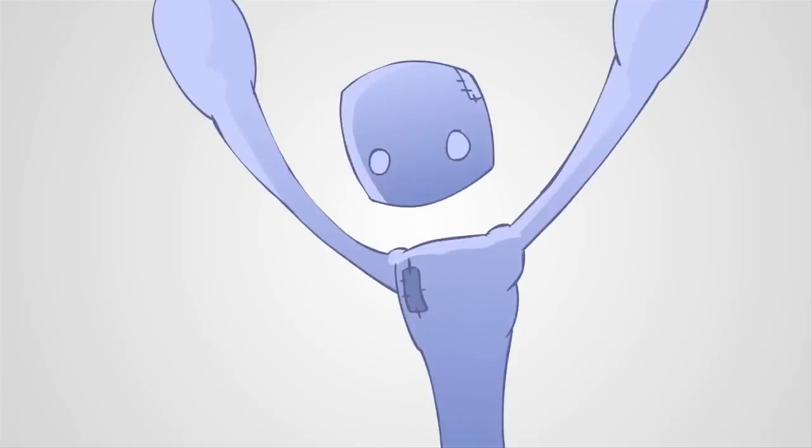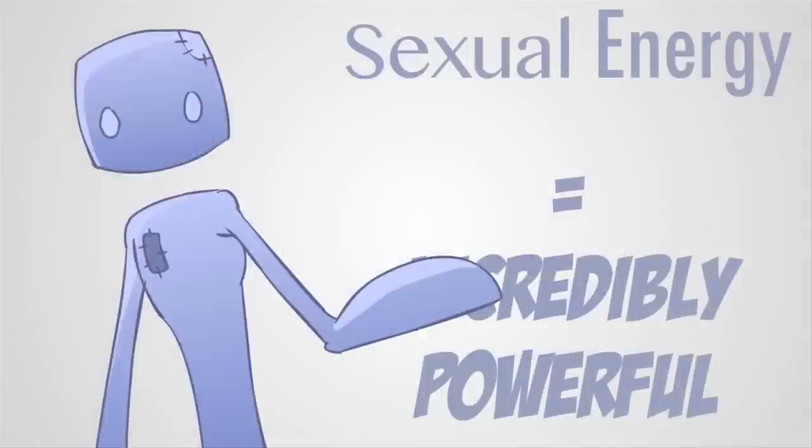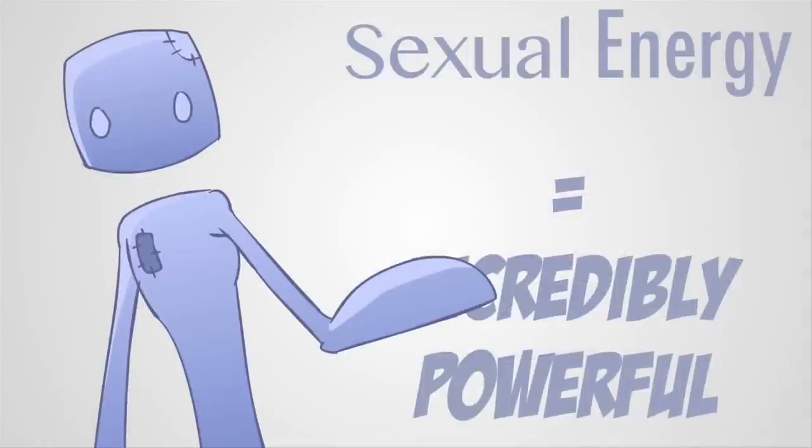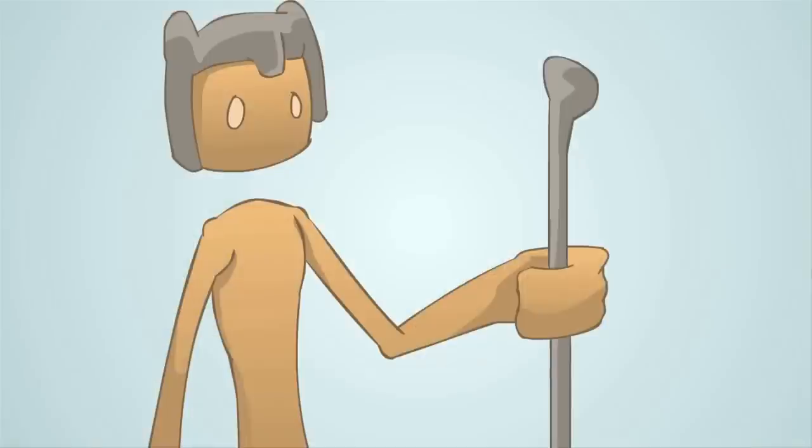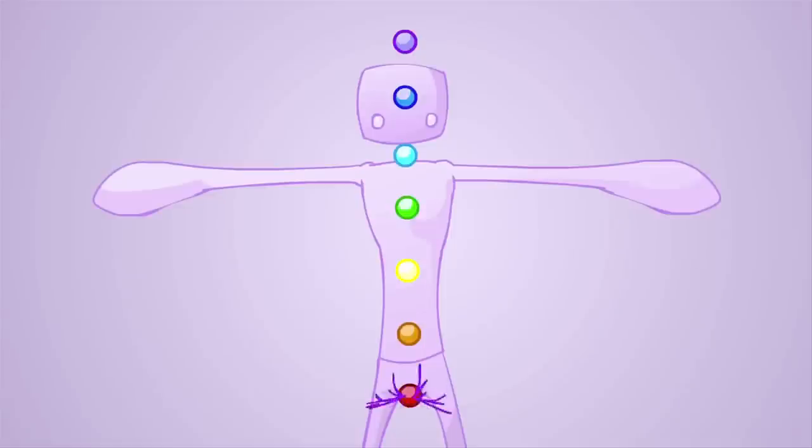Now, this could be a huge topic on its own, like how energy travels up and down the body through a vertical tube between five energy channels that counter-rotate as they extend through the body, but basically, sexual energy is an incredibly powerful energy. We definitely abuse it today, but what the Egyptians knew was that when you had an orgasm, a very large amount of energy bursts from your root chakra all the way up your spine to the top.